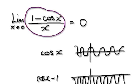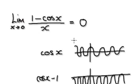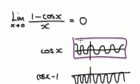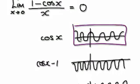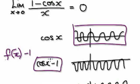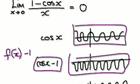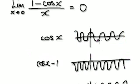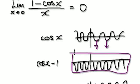To understand this, visualize your cosine graph — it will look like this. Apply the transformation f(x) - 1. That will give you this, and the graph will look like this. Basically, you would drag everything down by 1, which gives you this.